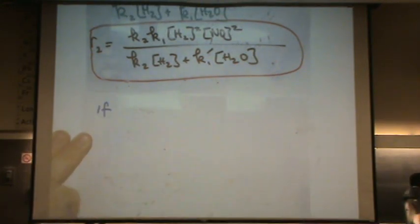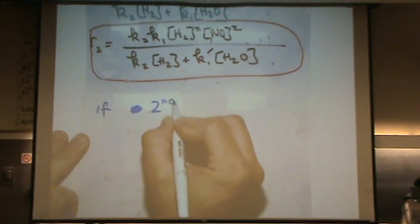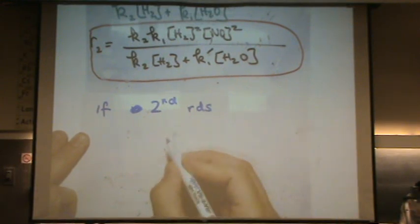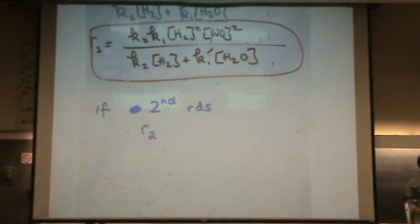If, just like what you were asking, the second one, rate 2 is RDS, why don't you tell me what that means about rate 2? Is that a large or small number? Small number, does that make sense? It's tiny. If it's slow, the rate is small.